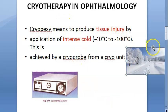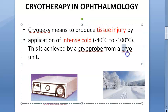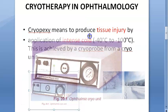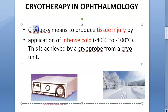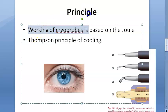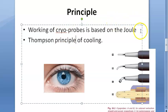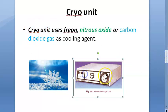To achieve cryotherapy you need two things: cryo probes and a cryo unit. This is the ophthalmic cryo unit. Cryopexy means to produce tissue injury using intense cold, which is achieved by a cryo probe from a cryo unit. The working of cryo probes is based on the Joule-Thomson principle of cooling.